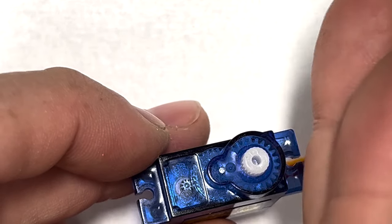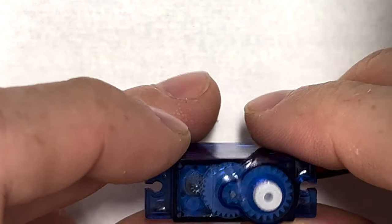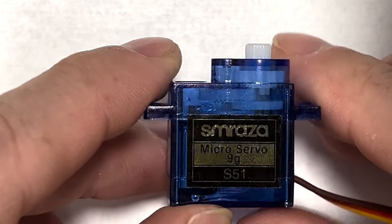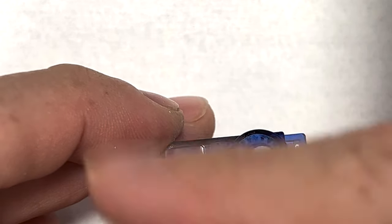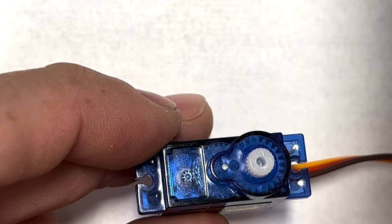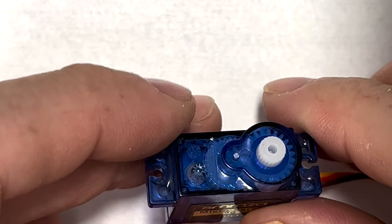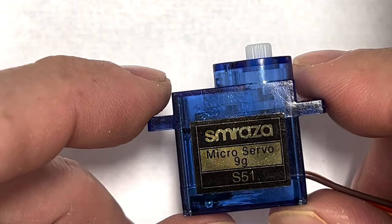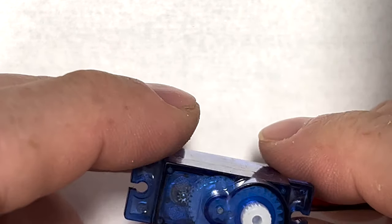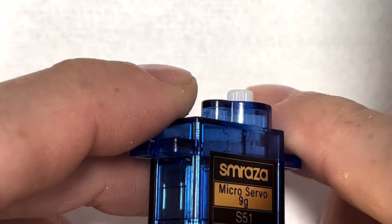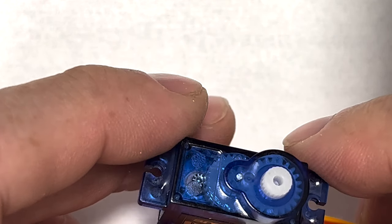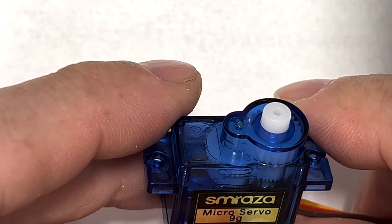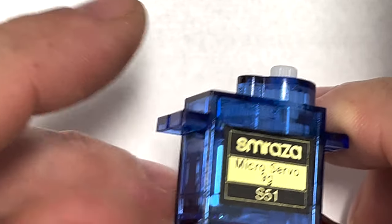One of the nice things about servo motors is that we can set their angle in code very precisely, but the downside is they don't do a full circle. They only have a range, sometimes it's zero to 180, zero to 90, these ones happen to be zero to 120 degrees.